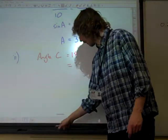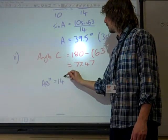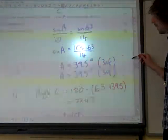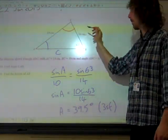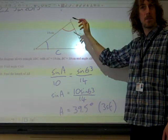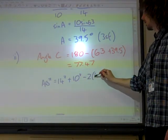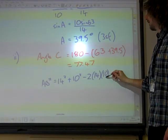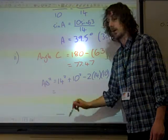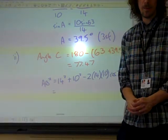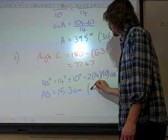And so now we can use the cosine rule and say that AB squared is 14 squared plus 10 squared. Remember, it's this one squared, that squared, that squared. Minus twice, 14 times 10 times cos of C. So minus twice, 14 times 10 times cos 77.47. If we do that and square root it, we get that AB is 15.3 centimeters.